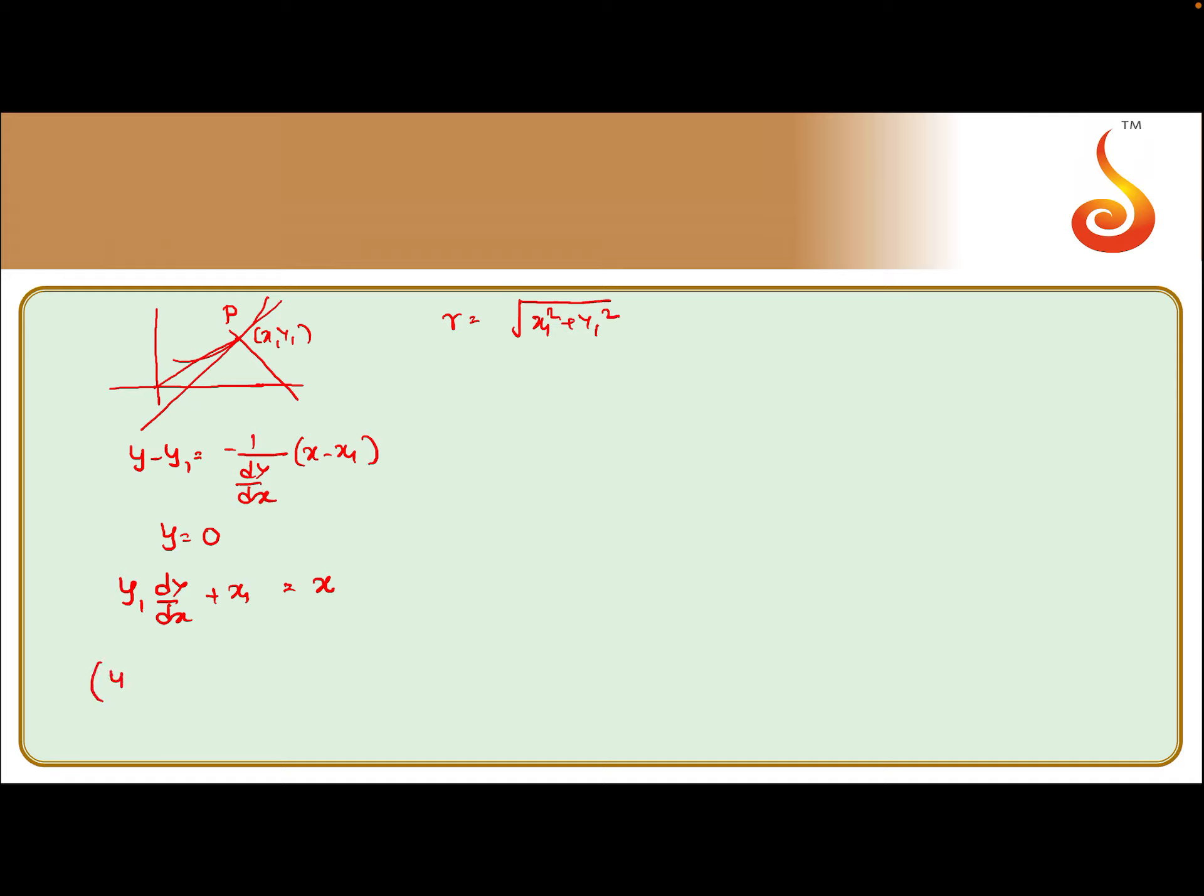So what is given to us: y(dy/dx) × x = 2 times the square of the radius vector, (x² + y²).